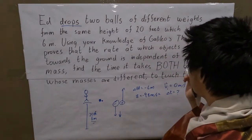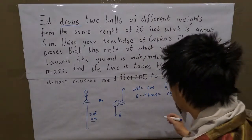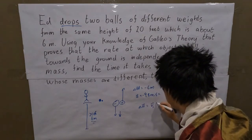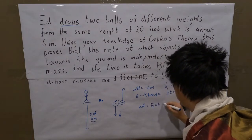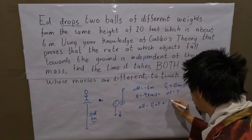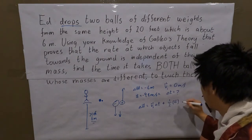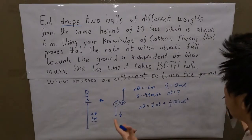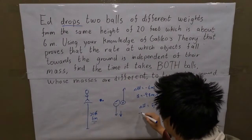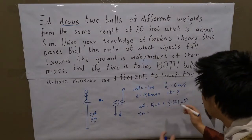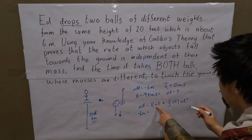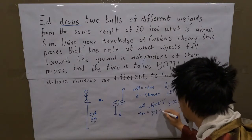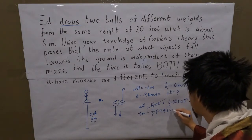We have change in position, initial velocity, acceleration, and time. The best equation is: change in position equals initial velocity times time, plus one half the acceleration times time squared. All we have to do is plug in the numbers. Negative 6 meters equals zero times delta-t — zero times anything is zero, so that part is gone — and we are only left with one half times negative 9.8 times delta-t squared.